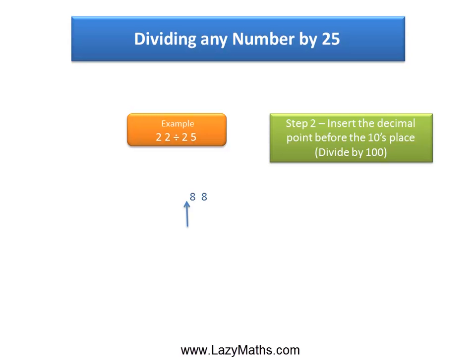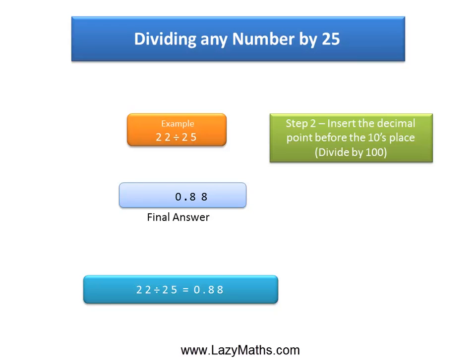88, the tens place value is 8, and before the 8 we insert the decimal point right here, and we get 0.88 as our final answer.